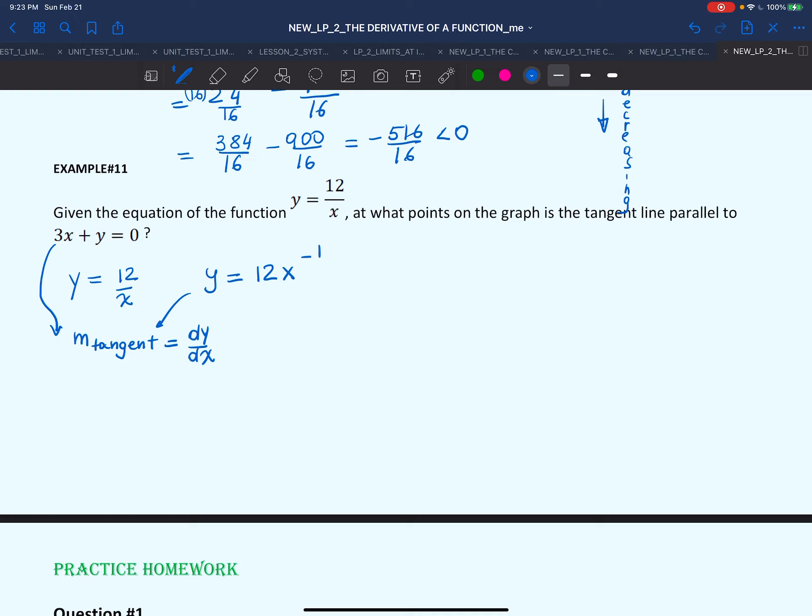The slope of the tangent of our function would equal the derivative dy/dx. We are told that the slope of the tangent would equal the slope of this function, because two parallel lines will have equal slopes. We have two things to take care of. First, we're going to find the slope of the given equation. This is not in slope-intercept form. 3x + y = 0, so y = -3x. The slope here is -3.